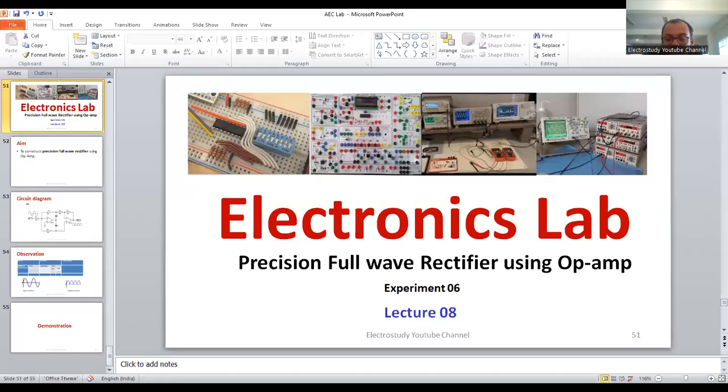In this session, what we have done is we have discussed how to rig up the circuit for precision full wave rectifier using operational amplifier and what are the parameters you are going to measure, what could be the output you are expected to get, how to do the connections in precise. Let me know if you are having any queries related to this experiment. In the coming session, I am going to discuss monostable multivibrator and astable multivibrator.